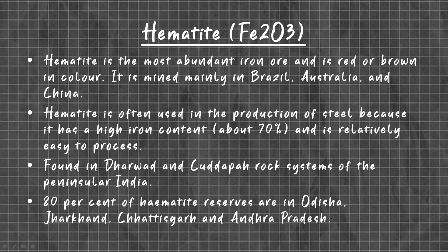Hematite is found in the Dharwar and Cuddapah rock systems of Peninsular India. About 80% of hematite reserves in India are in Odisha, Jharkhand, Chhattisgarh, and Andhra Pradesh. Hematite is the most abundant iron ore present in India and is a pure form of iron ore, containing 70% iron.